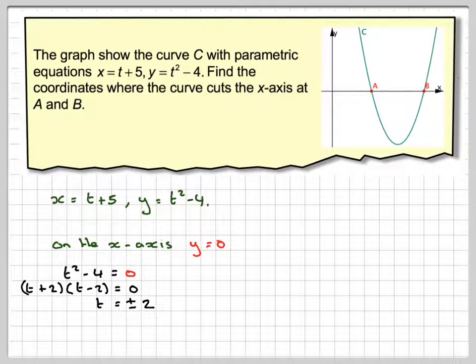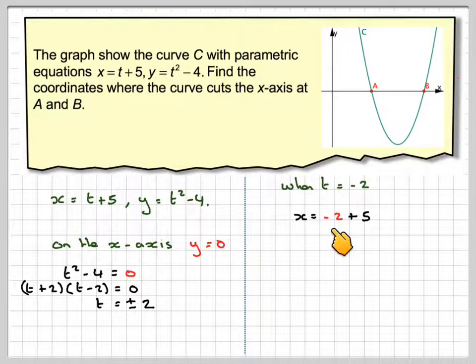Now put the values of t into the x equation to find the x-coordinates. When t equals minus 2, x equals minus 2 plus 5, which equals 3. So point A is (3, 0).